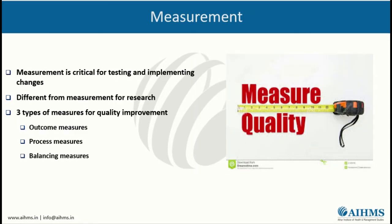Next is measurement. Measurement is critical for testing and implementing changes, and is different from measurement for research. The purpose of measurement is to discover new knowledge; it may take a long duration of time. Control for any biases as much as possible, and gather as much data as possible. There are three types of measure for quality improvement: outcome measures, process measures, and balancing measures.